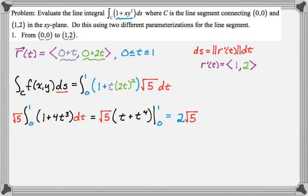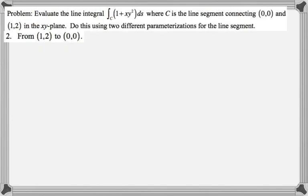Now what we want to do is the same problem, but we want to go in the opposite direction. So our problem is exactly the same, except now we want to go from (1,2) and end at (0,0). So our path is a little bit different, or at least the direction along the path. In this case, we start at 1, we end at 0, which means delta x is negative 1, so it's going to be 1 minus t. For y, we start at 2, end at 0, delta y is negative 2, so it's going to be 2 minus 2t. And t will go from 0 to 1.